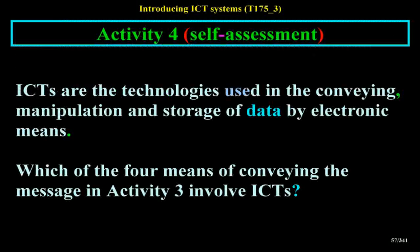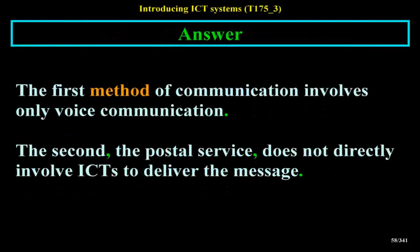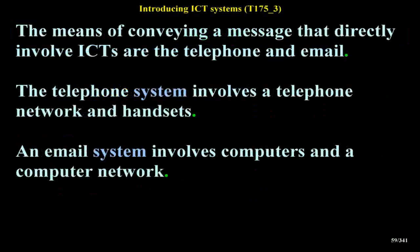Activity 4 Self-Assessment: ICTs are the technologies used in the conveying, manipulation and storage of data by electronic means. Which of the four means of conveying the message in Activity 3 involve ICTs? Answer: The first method involves only voice communication. The second, the postal service, does not directly involve ICTs to deliver the message. The means that directly involve ICTs are the telephone and email.